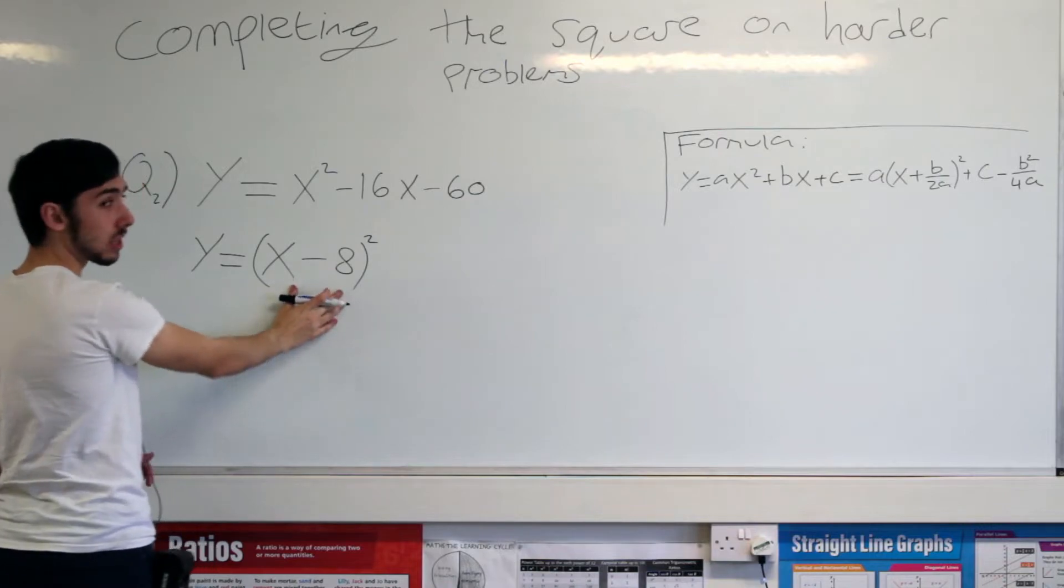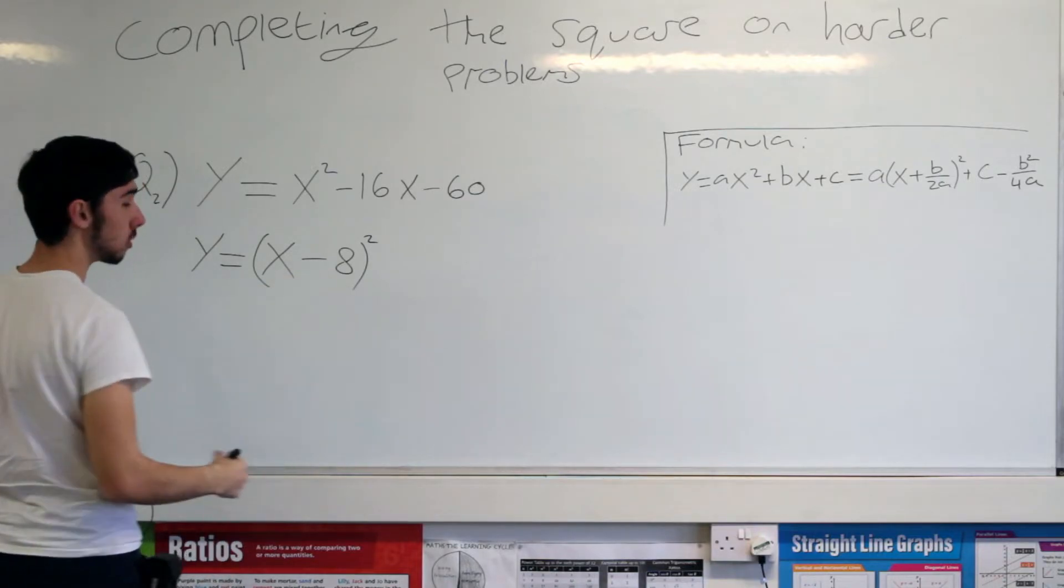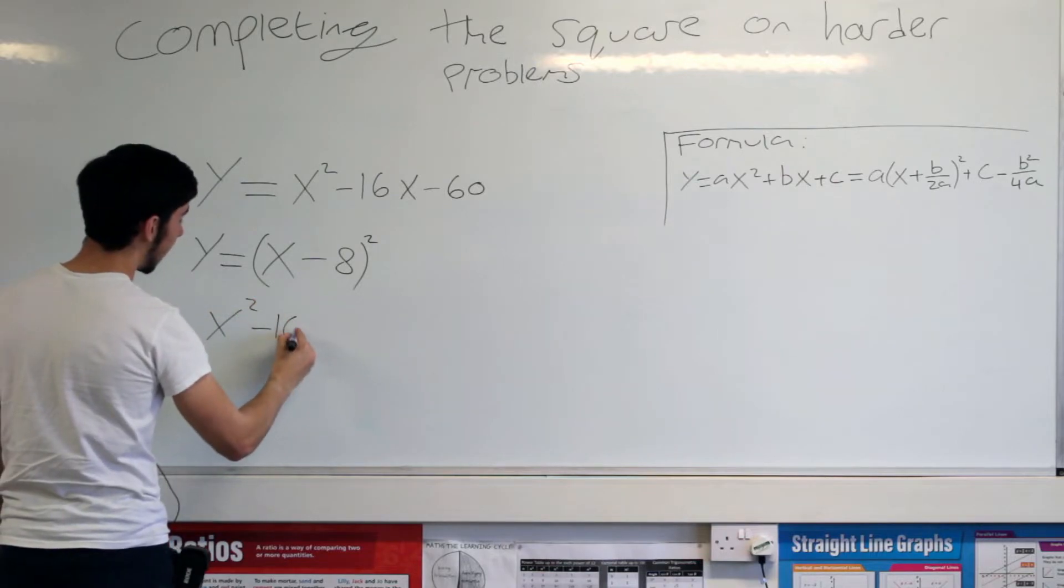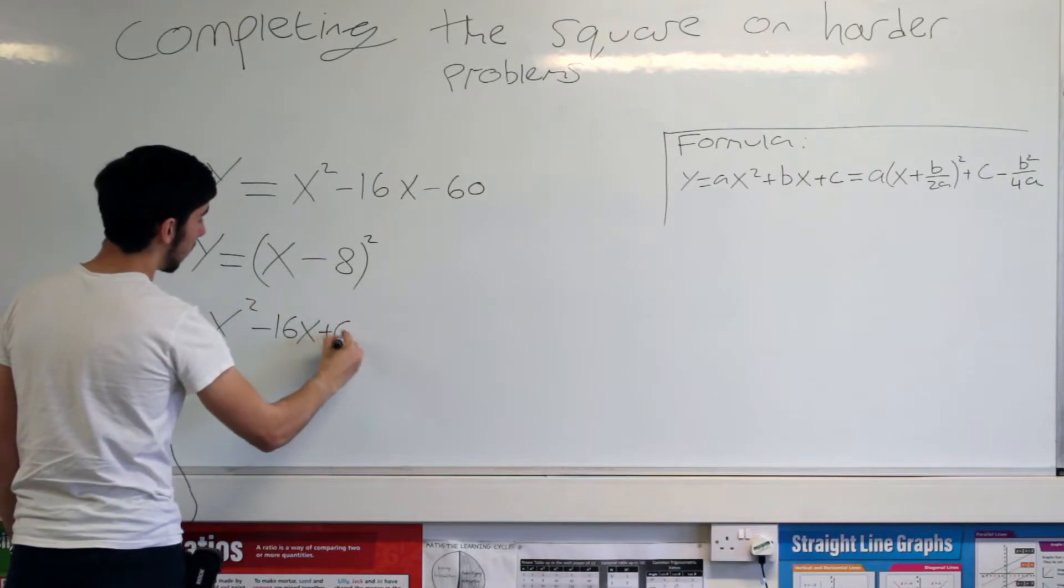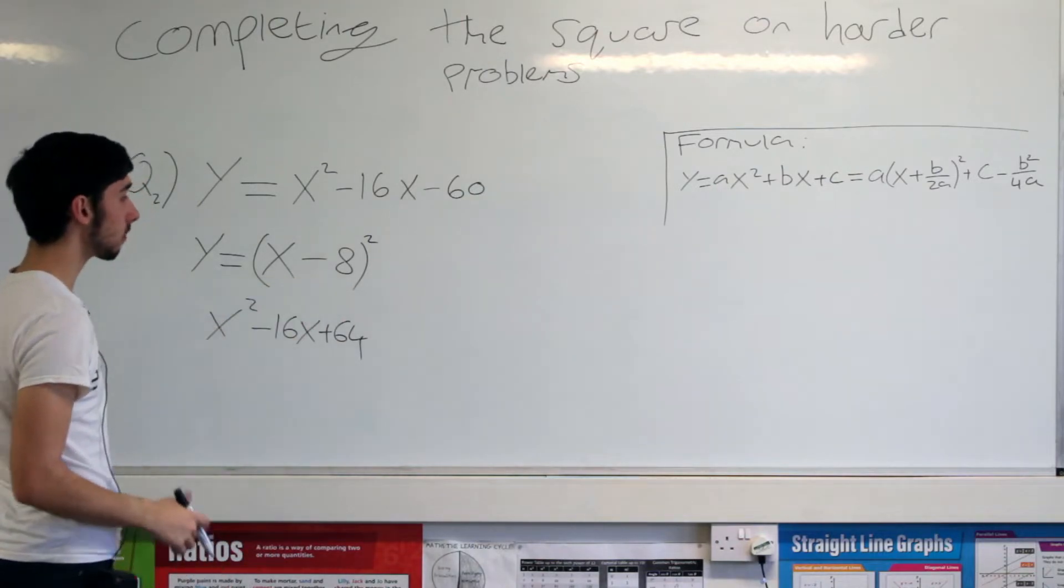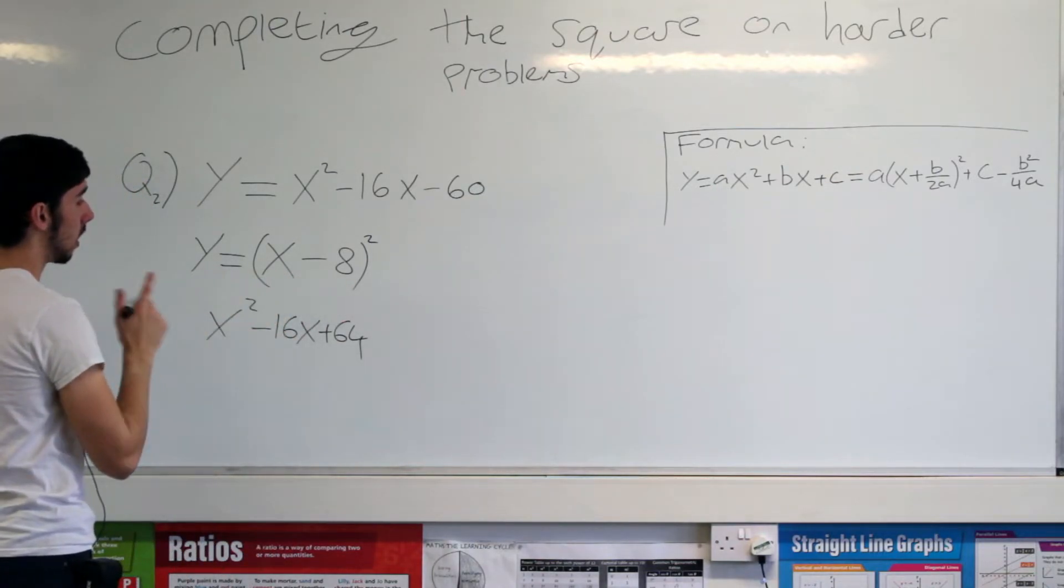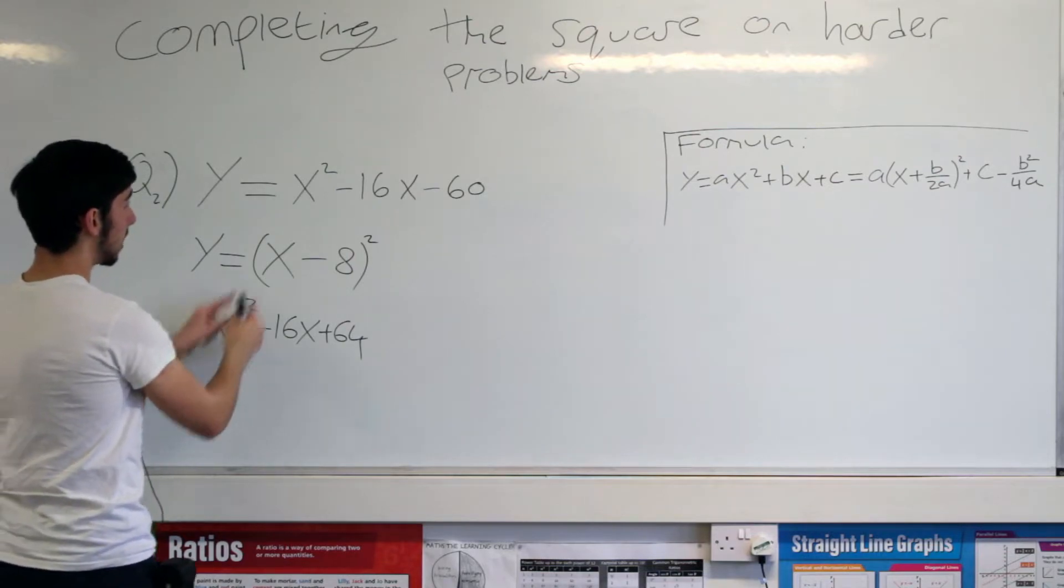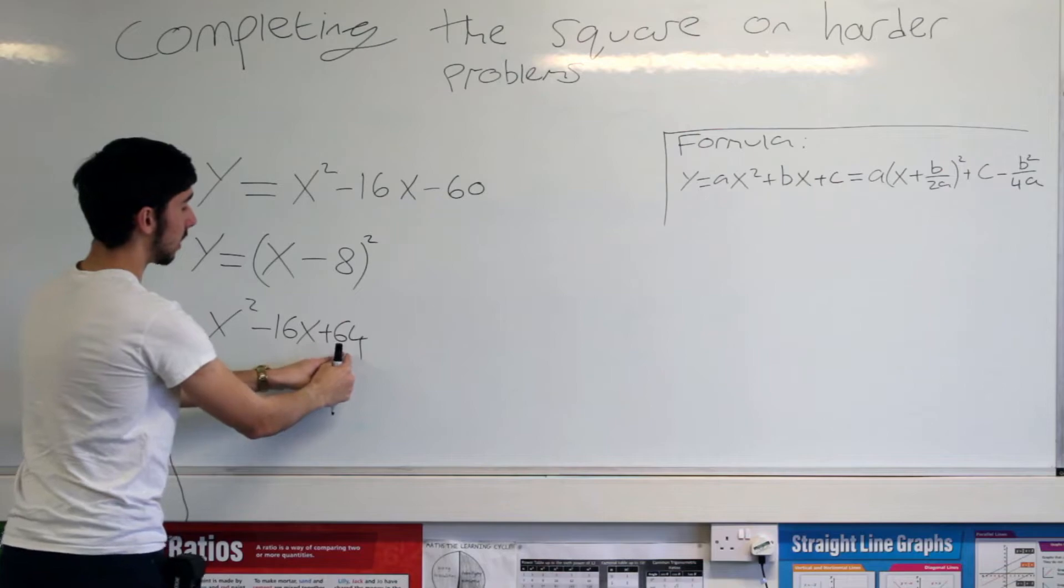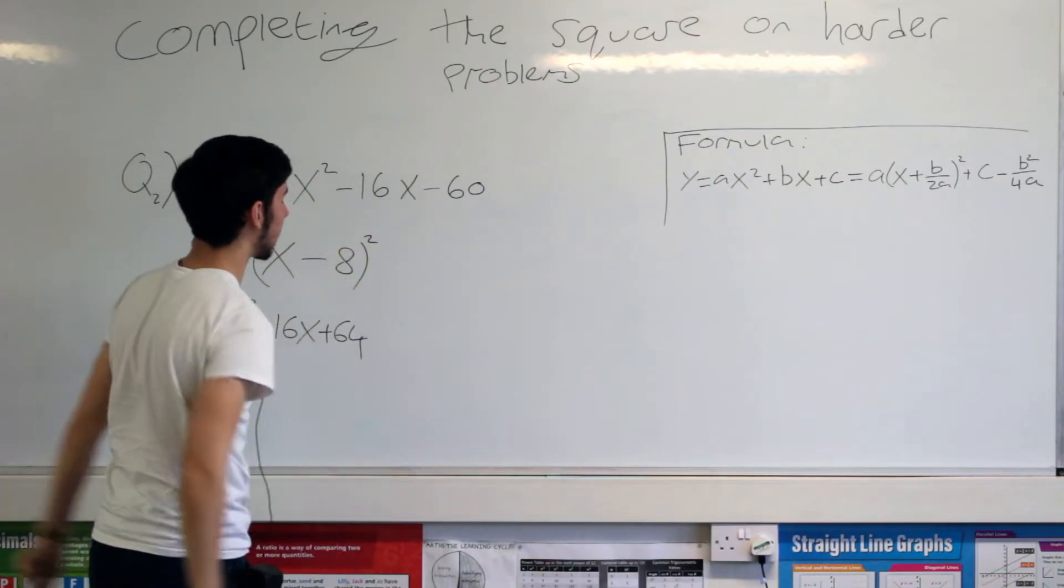Okay, now, I'm going to tell you what this is. This right here, you can do it for yourself if you'd like to, is going to be x squared minus 16x plus 64. Okay, you can do this if you want, but that's what that is if you expand that out using FOIL. Okay, so x squared, x squared, minus 16x, minus 16x, plus 64, minus 60.